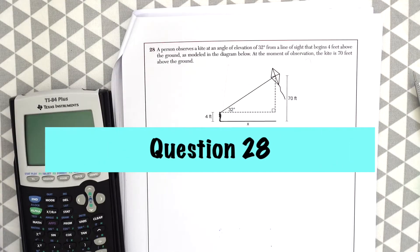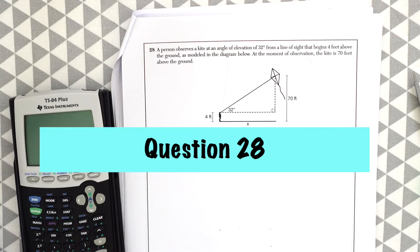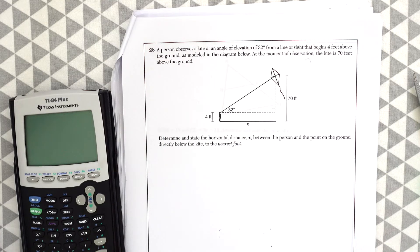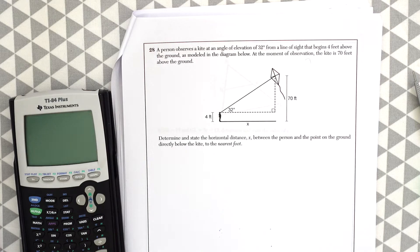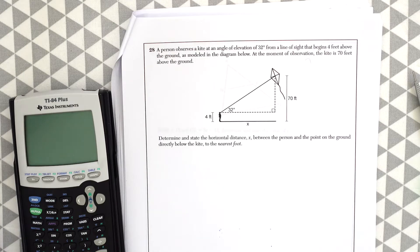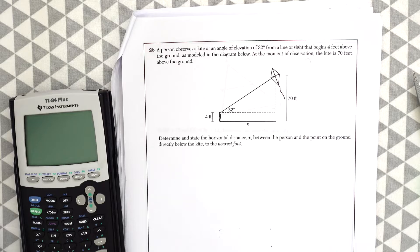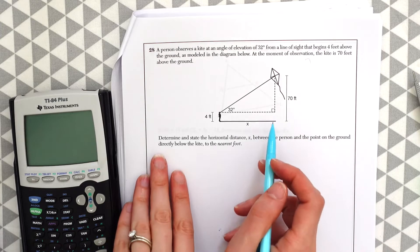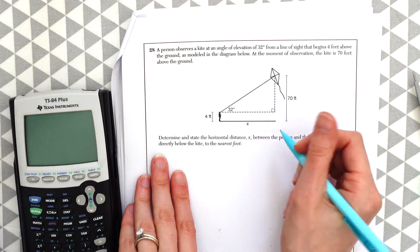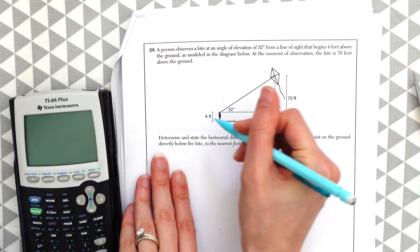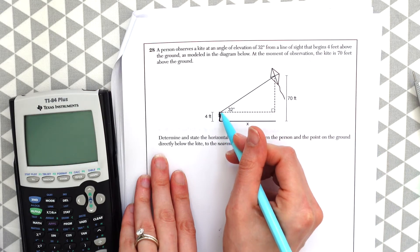Question 28. A person observes a kite at an angle of elevation of 32 degrees from a line of sight that begins 4 feet above the ground is modeled in the diagram below. At the moment of observation, the kite is 70 feet above the ground. Determine and state the horizontal distance x between the person and the point on the ground directly below the kite to the nearest foot. So here, we just want to be careful because this says 70 feet, notice our triangle within here, the space, there's a 4 feet space of the person's eyesight.